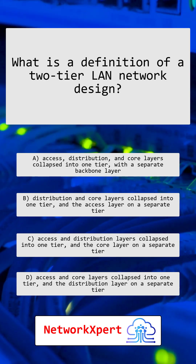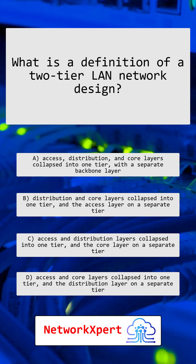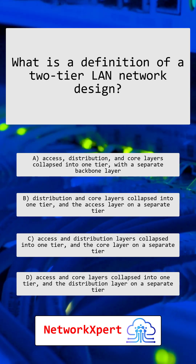What is a definition of a two-tier LAN network design? The access and core layers collapsed into one tier and the distribution layer on a separate tier.